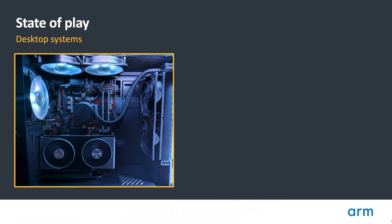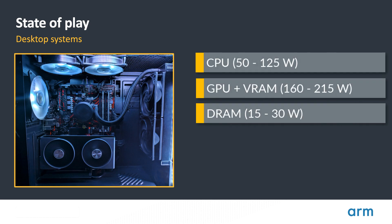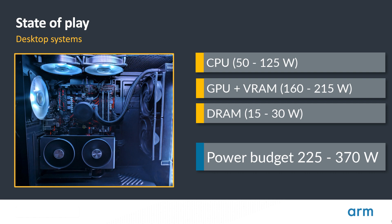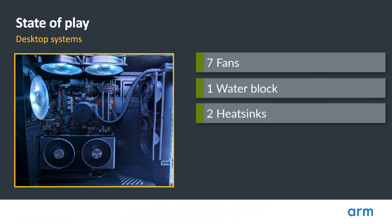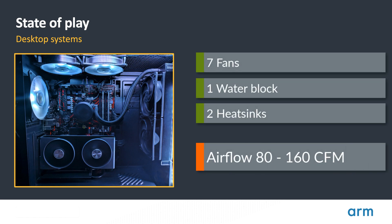Let's take a look at the system environment that the mobile rendering pipeline operates in. This is a typical gaming desktop. It has a discrete CPU, GPU, and DRAM, with the power budget for these being between 225 and 370 watts for a mid-end machine. All of this input power will eventually come out of the system in the form of heat. To sustainably draw this much power, the system relies on significant active cooling — multiple fans driving over 100 cubic feet per minute of airflow over large heat sinks, allowing it to dissipate the generated thermal waste.